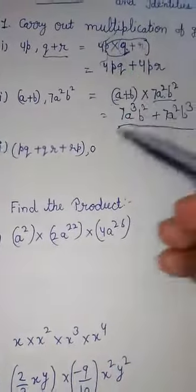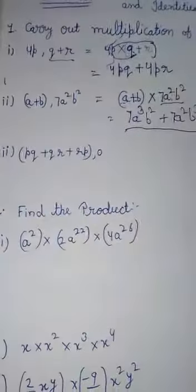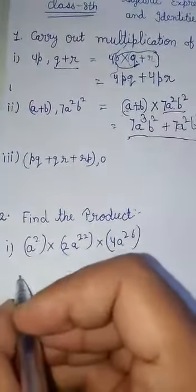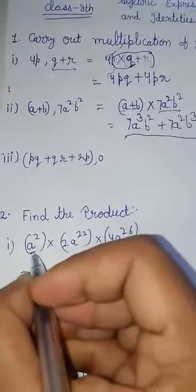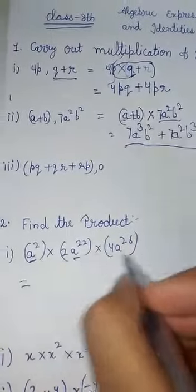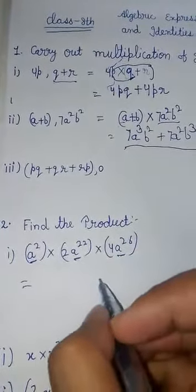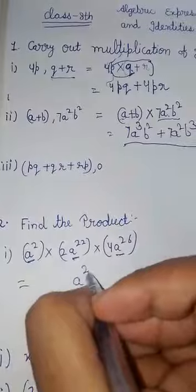Monomials multiply polynomials. Simply multiply. See, the base is the same, so the power will be added.